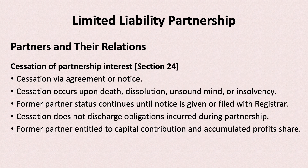Section 24 explains how partnership interest can cease — cessation of partnership interest. If a partner dies, faces unsound mind, or becomes insolvent, the partnership interest can come to an end. A former partner's status continues until notice is given or filed with the Registrar. Until that notice is filed confirming the person is no longer an LLP partner, their liability will remain.